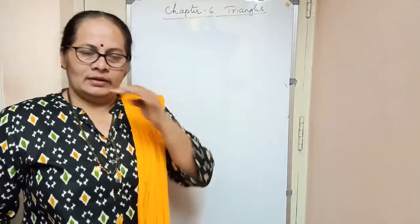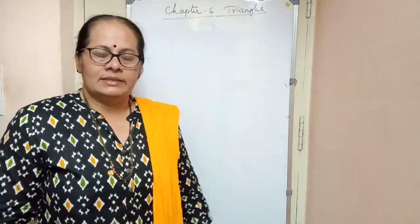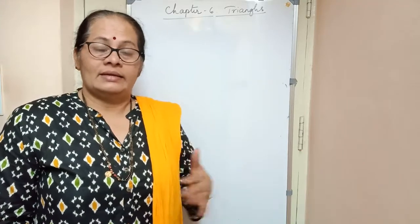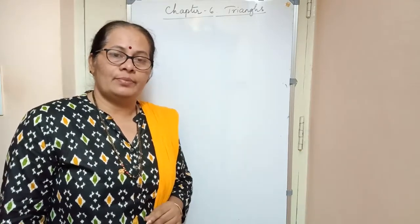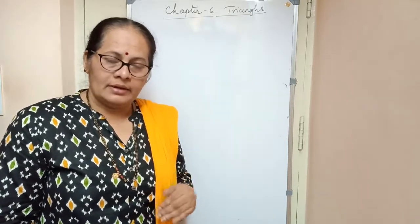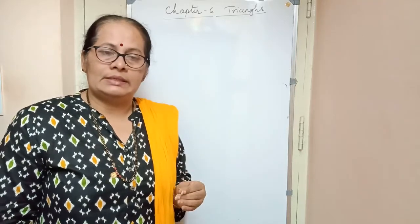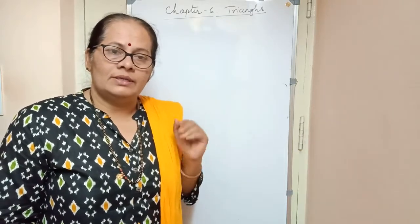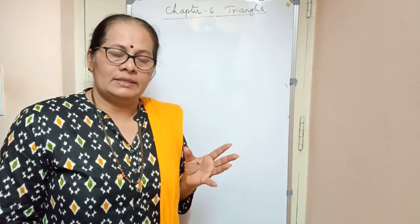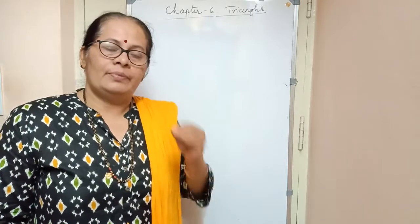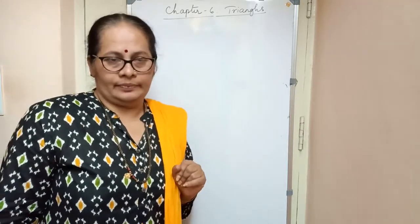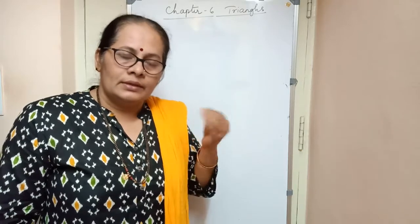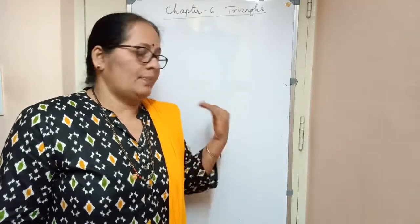Good morning students. In the previous video, we discussed Pythagoras' theorem, which states that in a right-angled triangle, the square of the hypotenuse is equal to the sum of the squares of the other two sides. We derived the equation and also learned the converse: if the square of one side equals the sum of the squares of the other two sides, then it is a right-angled triangle. We also discussed some examples. Today, I am going to discuss some other examples where we can apply Pythagoras' theorem.